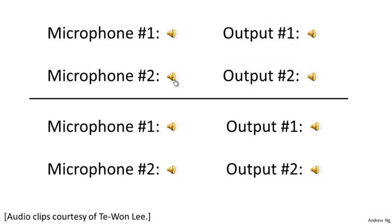Moreover, what the cocktail party algorithm will do is separate out these two audio sources that were being summed together to form our recordings. Here's the first output of the cocktail party algorithm — it separated out the English voice: one, two, three, four, five, six, seven, eight, nine, ten. And here's the second output — the Spanish voice: uno, dos, tres, cuatro, cinco, seis, siete, ocho, nueve, y diez. Not too bad.